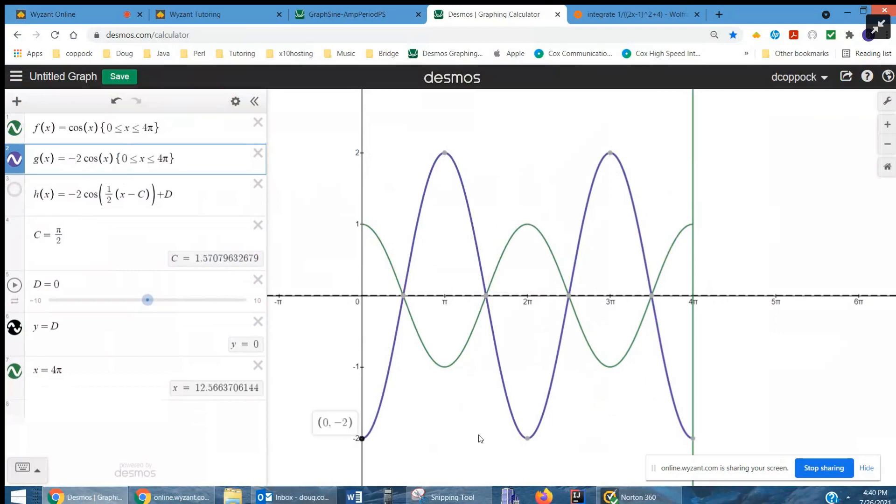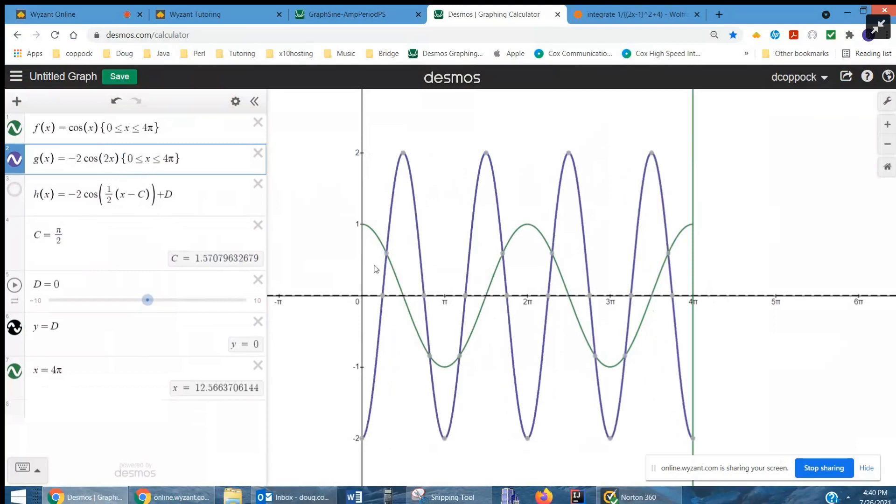Now notice how this purple function has one cycle from zero to 2π, but if I put a 2 in front of that x, it cuts it down—it starts repeating from zero to π, so it cuts it in half.